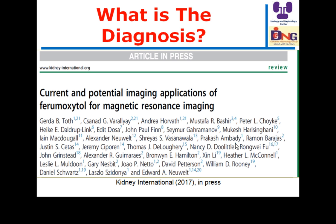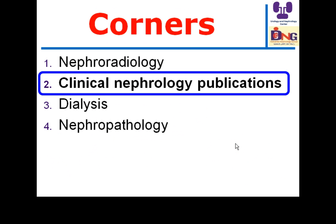The question is: can we use ferumoxytol safely to diagnose vascular problems by MRI? Because ferumoxytol as IV iron can be used in dialysis patients without the risk of nephrogenic systemic fibrosis. This is a very interesting article discussing current and potential imaging applications of ferumoxytol for MRI, but we are still waiting for more evidence on its validity in this scenario.